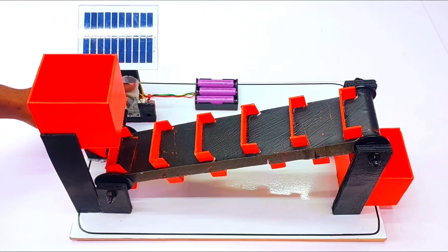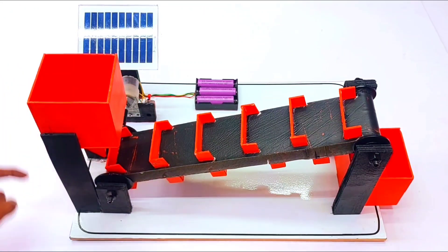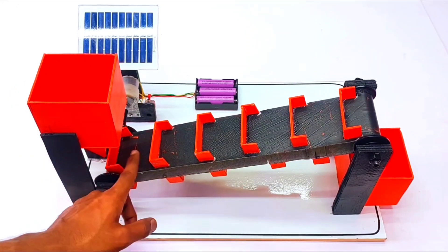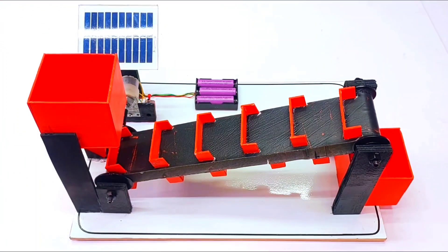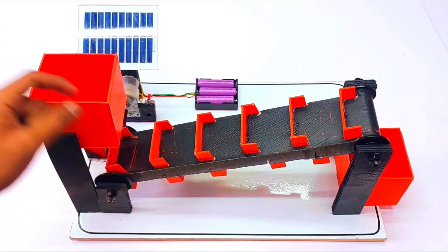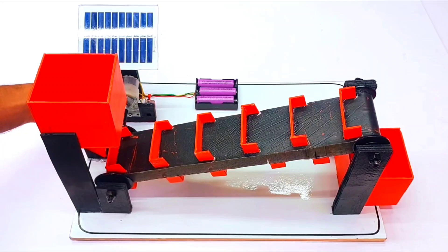Here is a 30 RPM gear motor which is directly connected to the conveyor belt. Whenever the motor rotates, the conveyor belt also rotates. Here are three lithium ion cells which produce around 12 volt power supply, which is directly given to this 30 RPM gear motor.